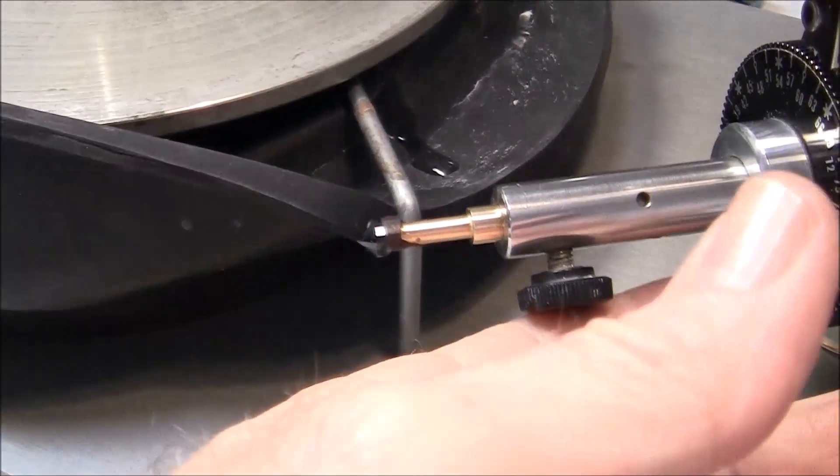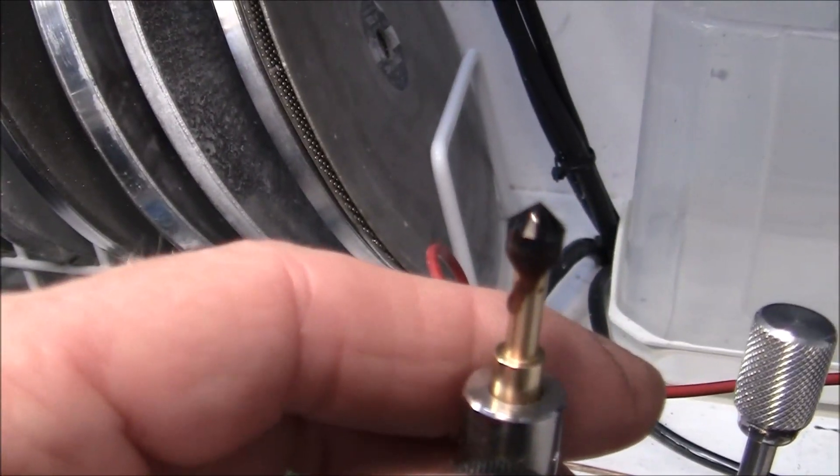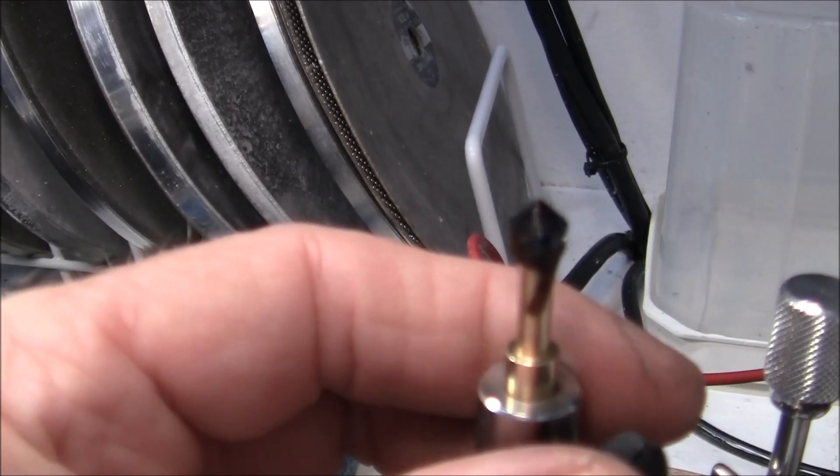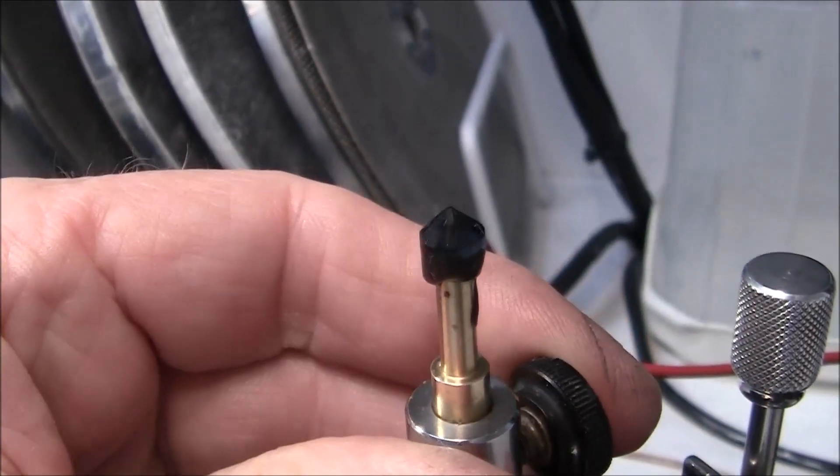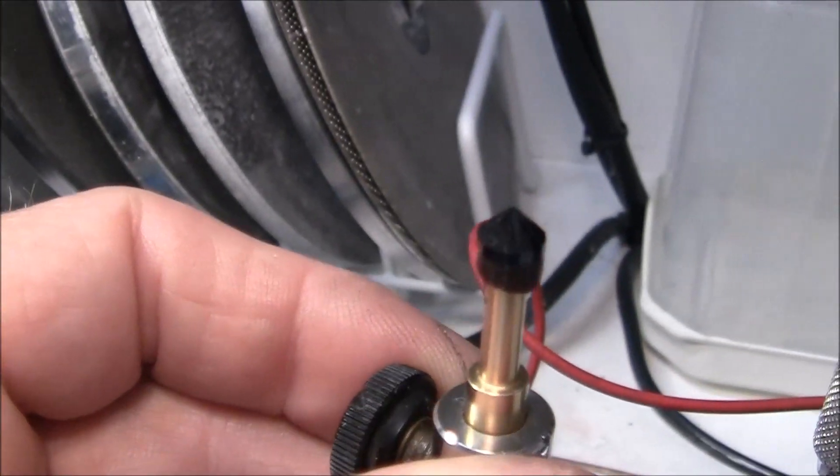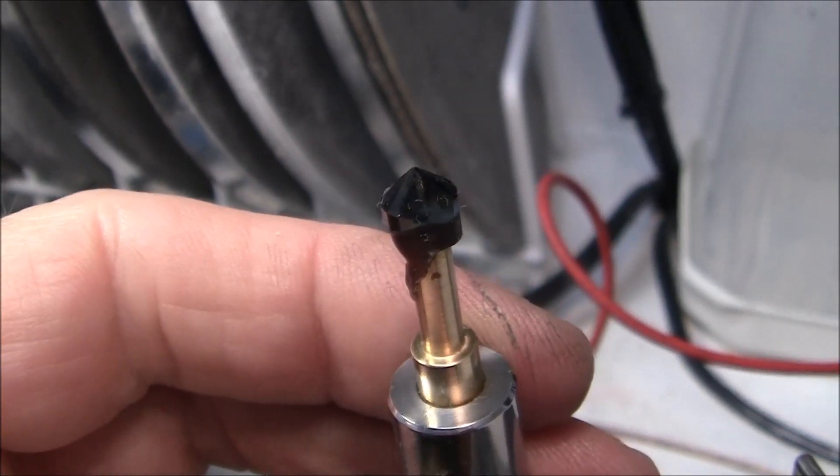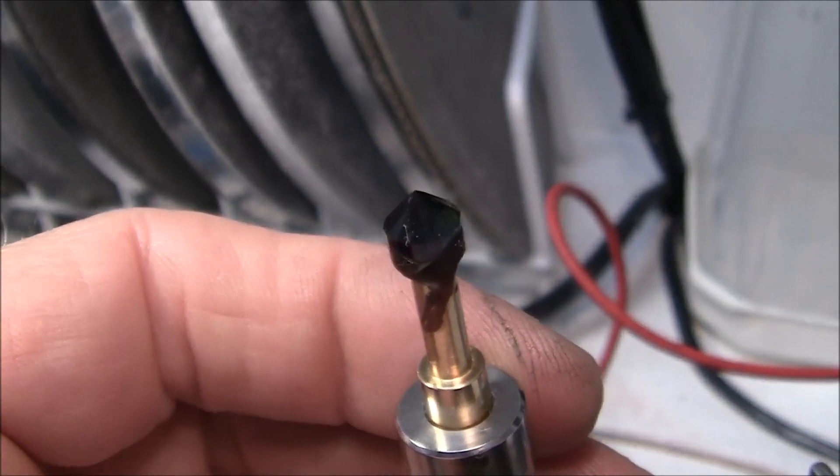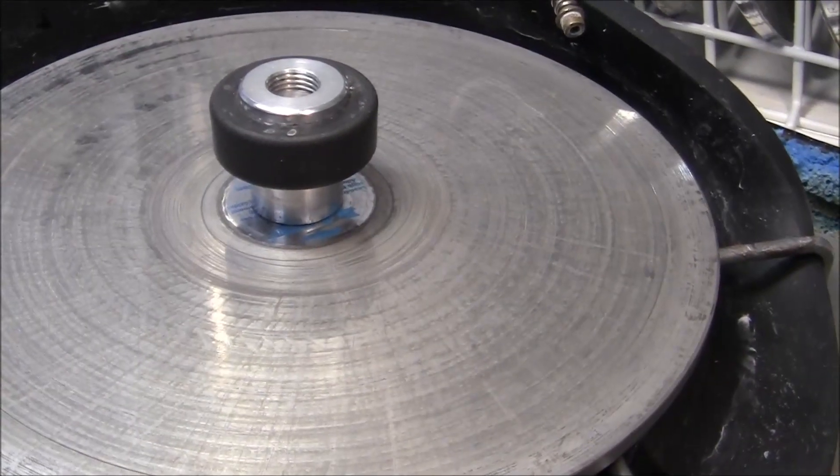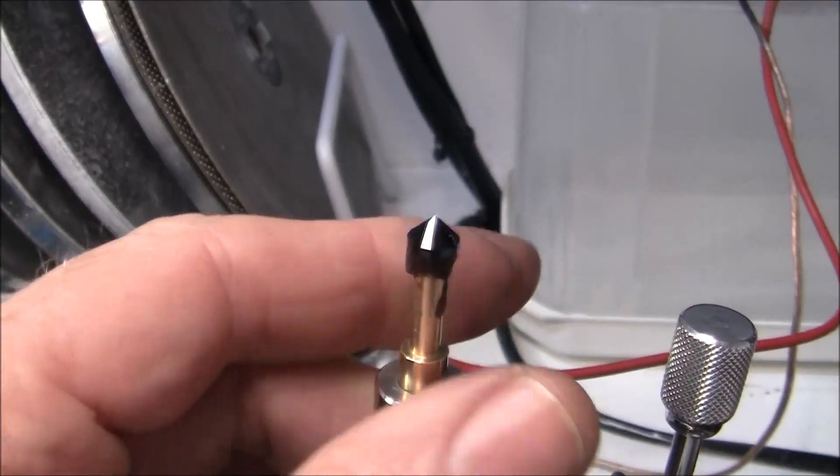I just finished polishing the girdle facets and I've also finished polishing the pavilion main and brake facets. So I'm finished with the pavilion of this stone. I used the bat tin lap with 60,000 diamond and it cut very nicely and polished very nicely.